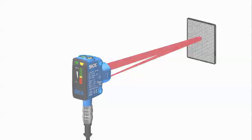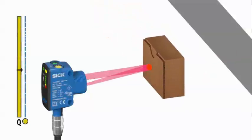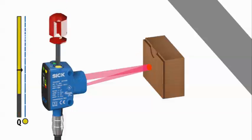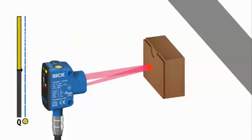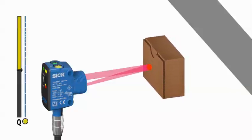Additionally, the SureSense light bar is a very useful tool with background suppression sensors. Traditionally, it was quite common for sensors to be adjusted on the very limit of an object or background, which can cause missed detections or unwanted detections when small fluctuations in the dimensions or position of an object or background occur.